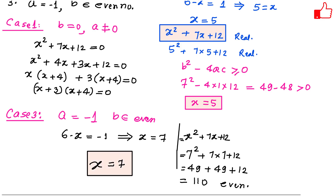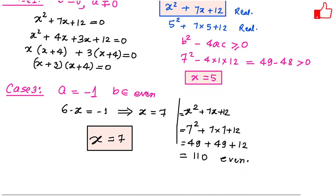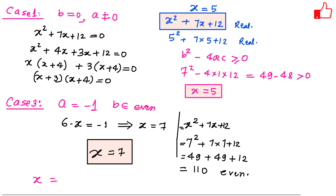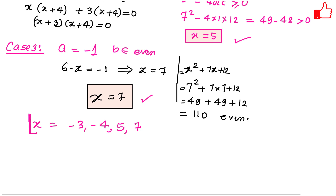So we have 4 solutions in total. From Case 1: x equals minus 3 and minus 4. From Case 2: x equals 5. From Case 3: x equals 7. So there are 4 possible values of x that satisfy this equation. I hope this video was helpful — please share, like, and subscribe. Thanks for watching!